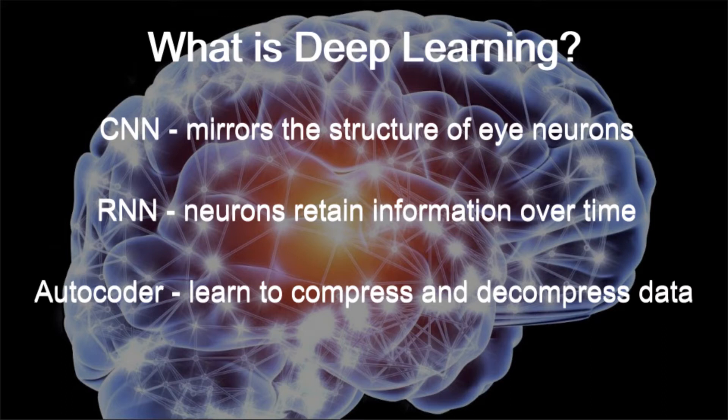There's another kind called the autoencoder, which is essentially a neural network that is able to learn to compress and decompress data by putting it through a bottleneck — a very thin layer of neurons where the data is pushed through. Over time, the network learns to compress that data.